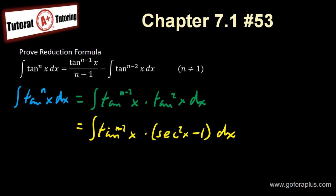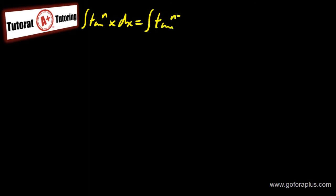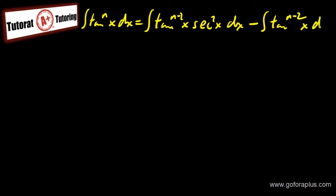Now I want to distribute into the brackets. So I have the integral of tangent^(n−2)(x) · secant²(x) dx. From what we need to prove on the right-hand side, I already have some part of it. I just need to evaluate the remaining integral. Let me recopy this: the integral of tangent^n(x) dx equals the integral of tangent^(n−2)(x) · secant²(x) dx minus the integral of tangent^(n−2)(x) dx.